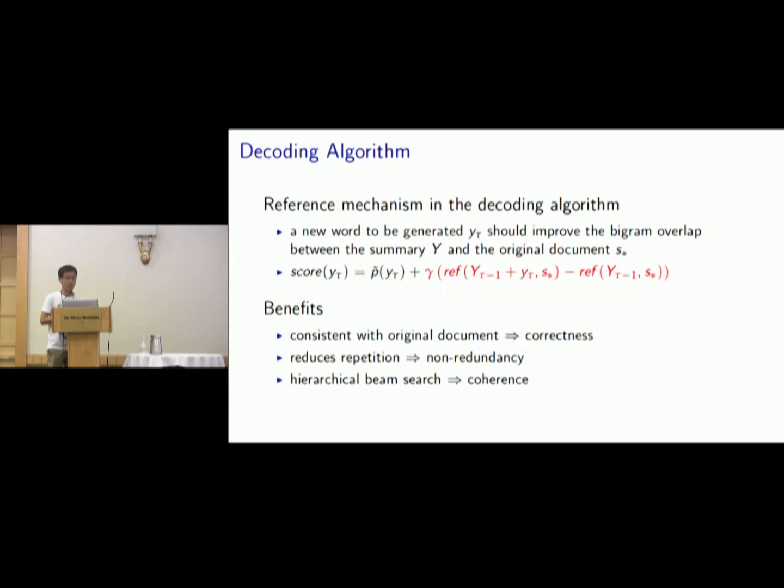There are several benefits for the reference mechanism. It makes the summary more consistent with the original document, so this is the requirement of correctness. And also reduces the repetition, so this is non-redundancy. And also enables the hierarchical beam search algorithm, so better for coherence. Hierarchical beam search is realized by referring to different original sentences, so we can get diverse candidate sentences, while traditional beam search will usually generate similar, very similar candidate sentences.